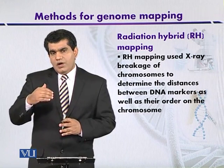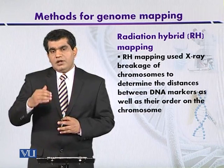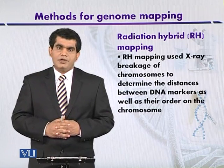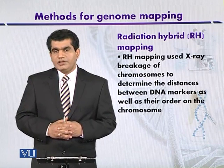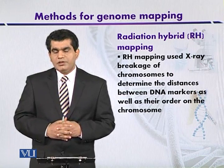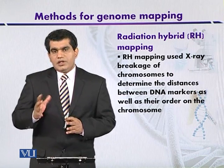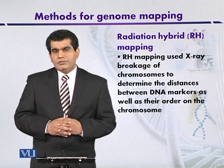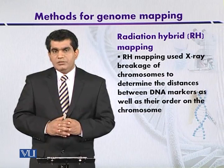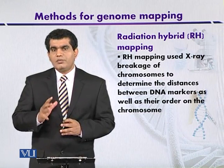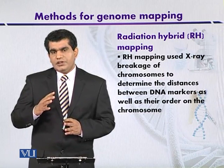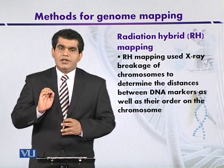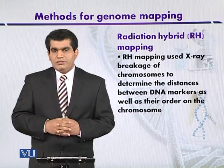RH mapping, or Radiation Hybrid Mapping, is a modification of genetic linkage mapping. In genetic linkage mapping, frequencies are measured on the basis of recombination where chromatids are exchanged. However, in RH mapping, chromatids are not exchanged due to the lack of meiosis. Instead, the DNA is directly broken by exposure to radiation.